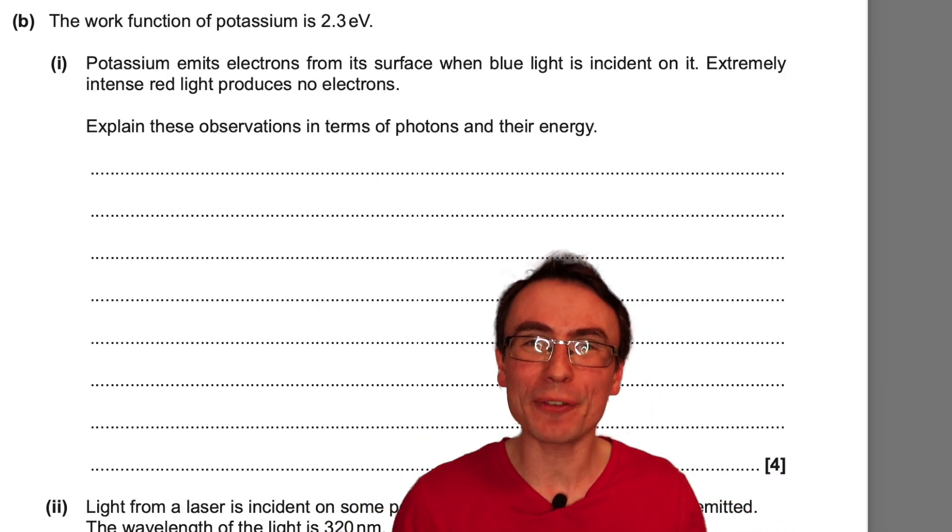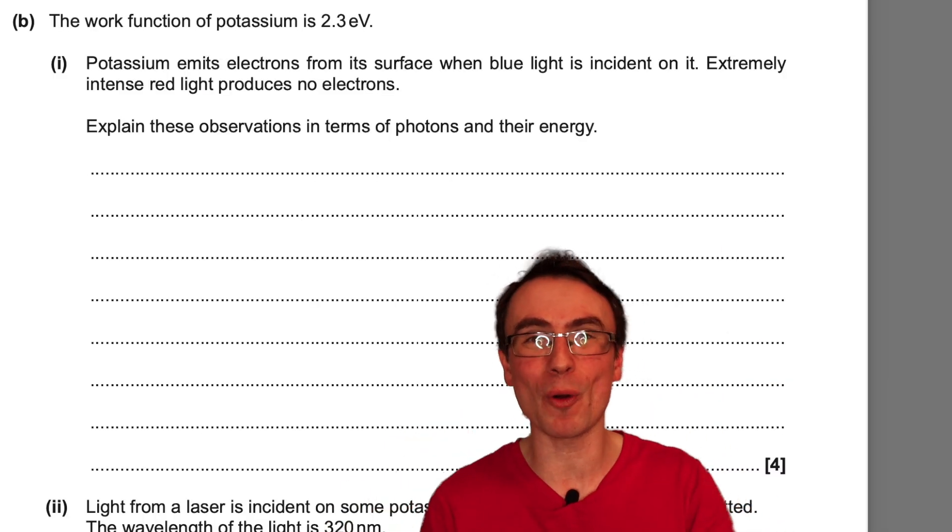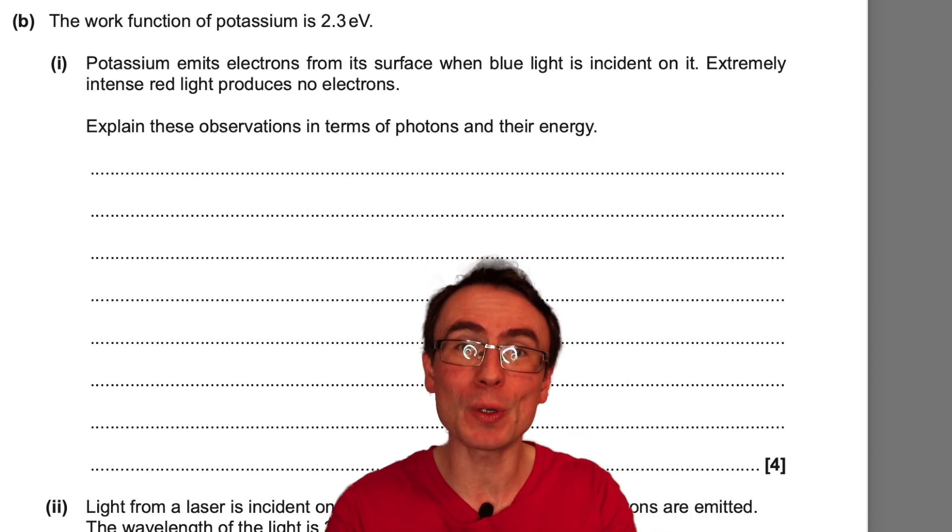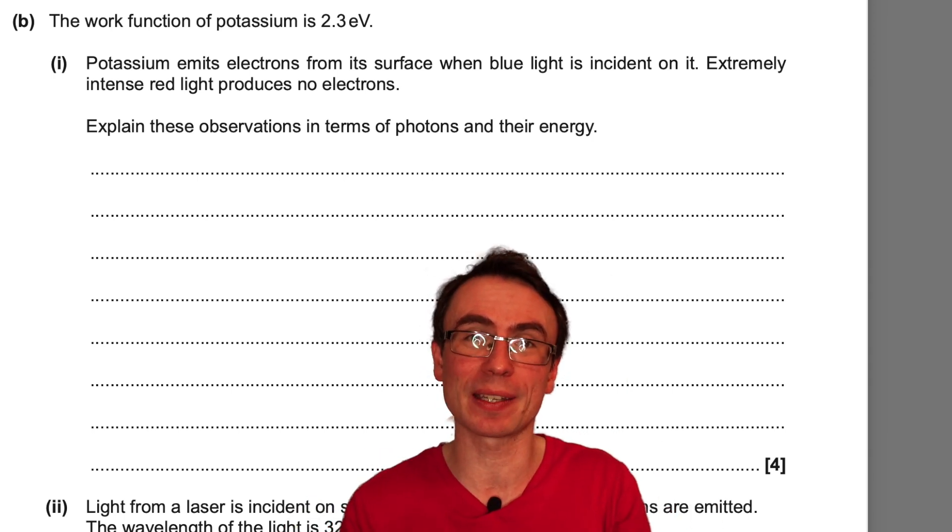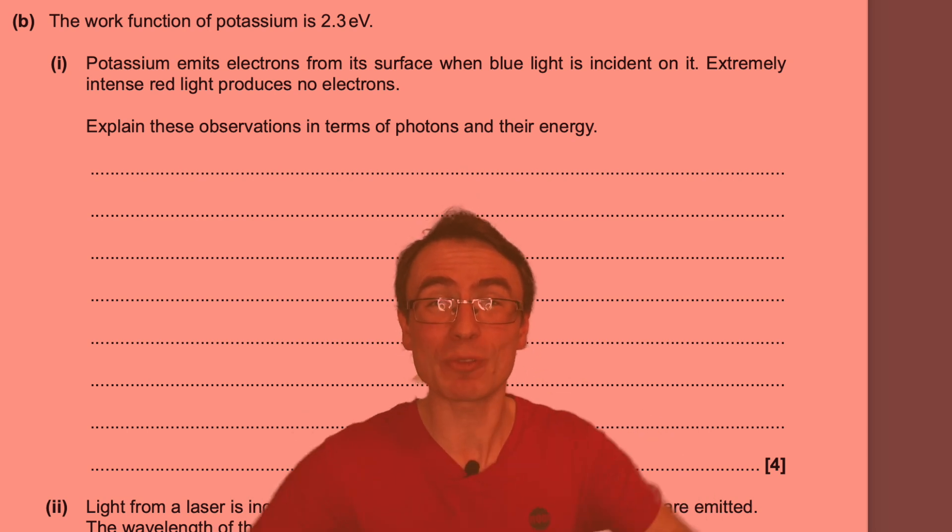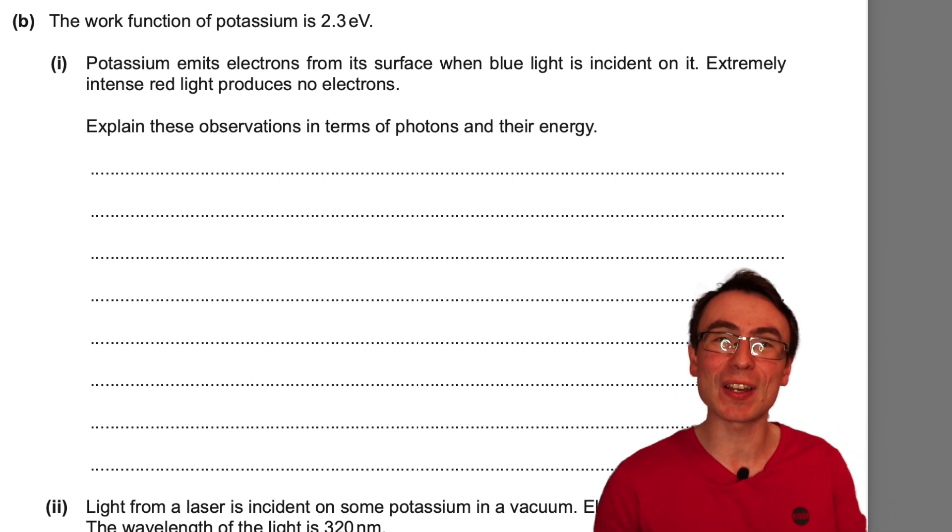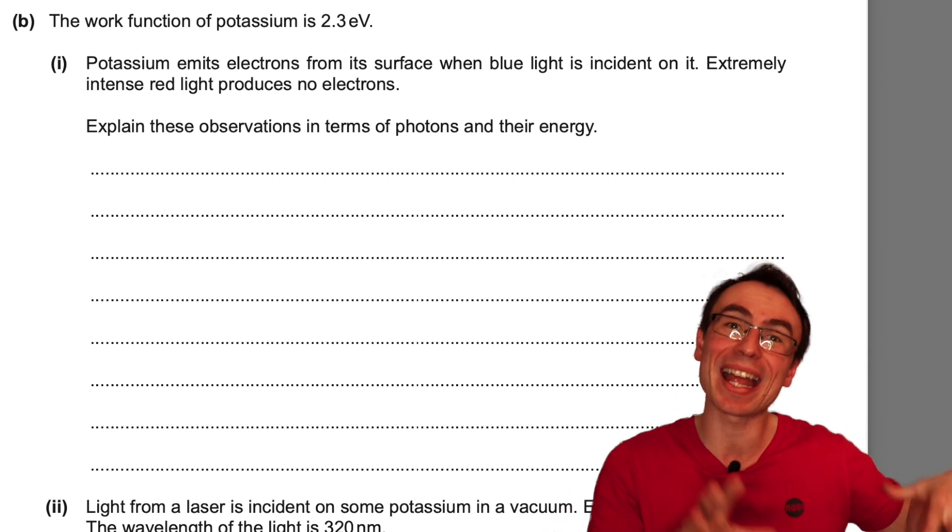Part B, we're given that the work function of potassium is 2.3 electron volts. Electrons are emitted when blue light is incident on it. However, extremely intense red light produces no electrons. We need to explain those observations in terms of photons and their energy.